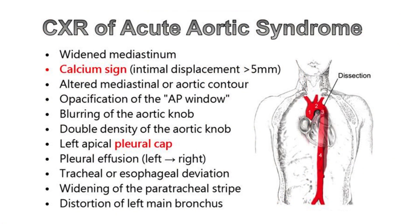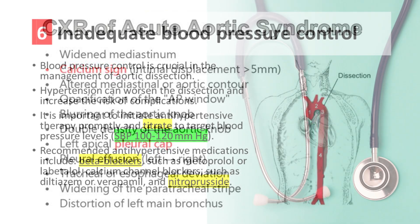Chest x-ray may reveal several signs of acute aortic syndrome, which include widened mediastinum, calcium sign with intimal displacement more than 5 mm, altered mediastinal or aortic contour, opacification of the AP window, blurring of the aortic knob, double density of the aortic knob, left apical pleural cap, pleural effusion especially on the left side, tracheal or esophageal deviation, widening of the paratracheal stripe, and distortion of left main bronchus. It is important for healthcare providers to be aware of these signs and to consider them in the differential diagnosis of patients presenting with chest pain or other symptoms suggestive of aortic disease.